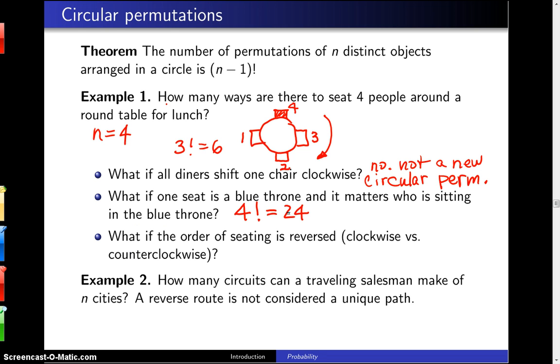Last question, what if the order of sitting is reversed, that is clockwise versus counterclockwise? Well in that case, who's on your left and who's on your right differs. And so in this case, this is a new circular permutation if you simply reverse the order in that fashion.